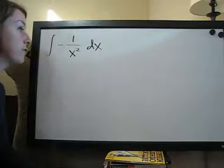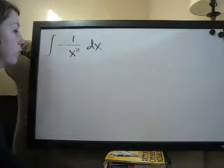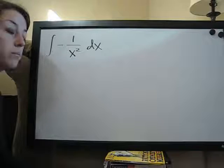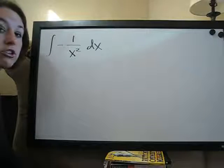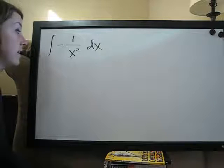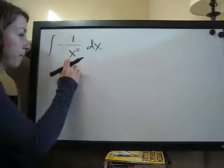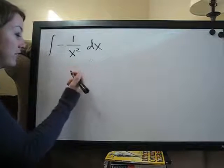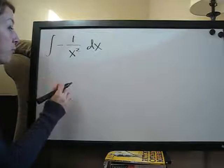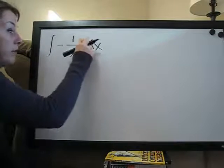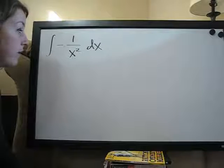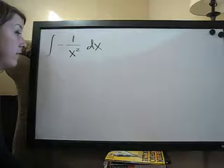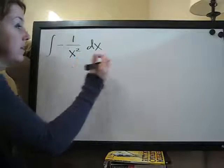Okay, so the first thing we're going to want to do is try to convert this to something that's not a fraction because it's more difficult to take the integral or antiderivative of a fraction than it is to take the antiderivative of something that's not a fraction. So the way that we're going to do that is move the x squared up to the top, and the easiest way to do that is just to make the exponent negative.